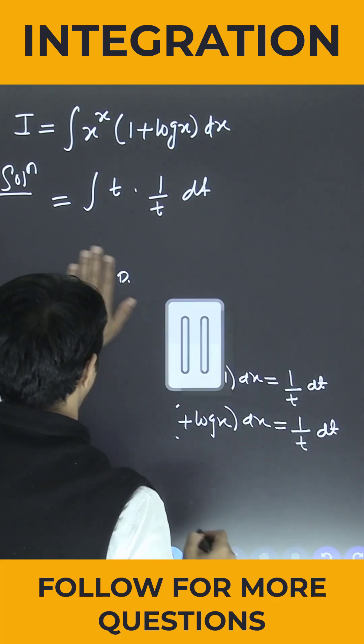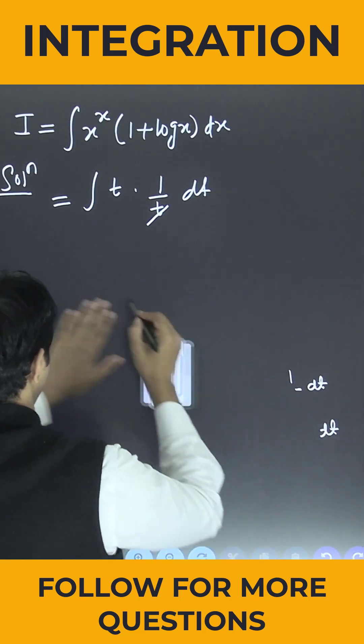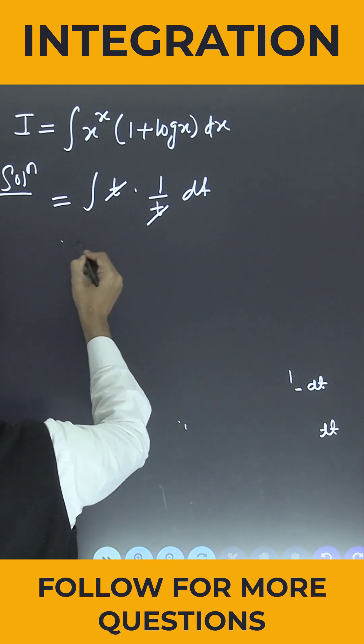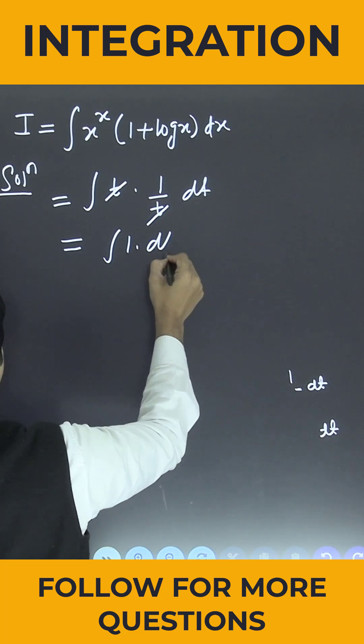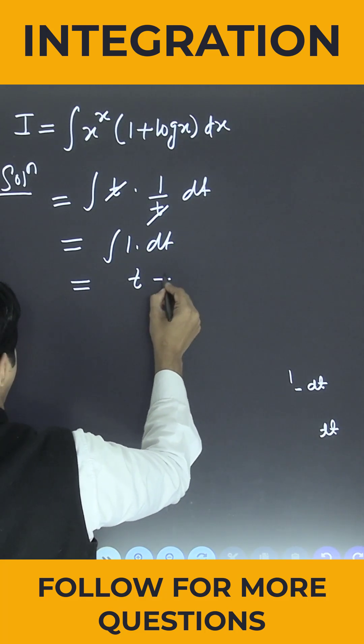Fine, now so can I say t and t cancel out, so we are left with integration of 1 into dt, so this is nothing but t plus c.